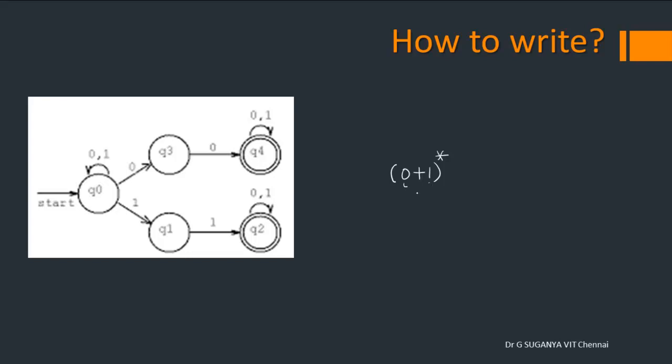which is represented as this. The self loop is being represented as star. So, once that is done, then you can branch to Q3 or Q1. If you go to Q3, through what is the symbol that you can reach Q3? It is through 0.